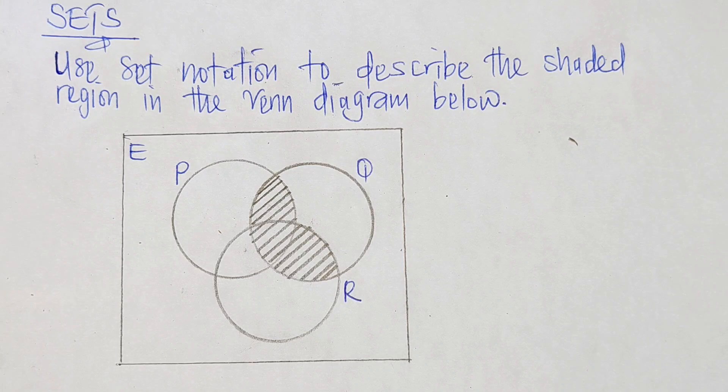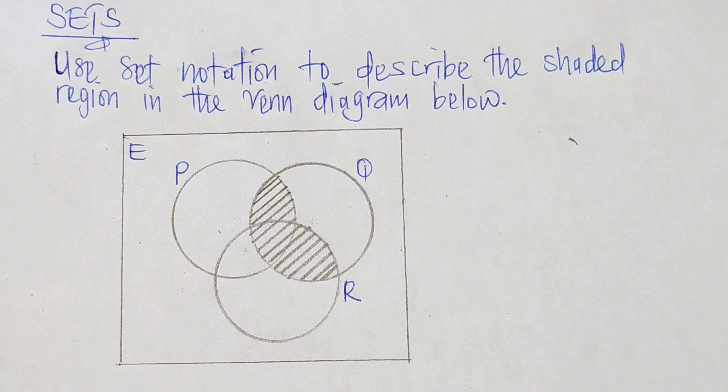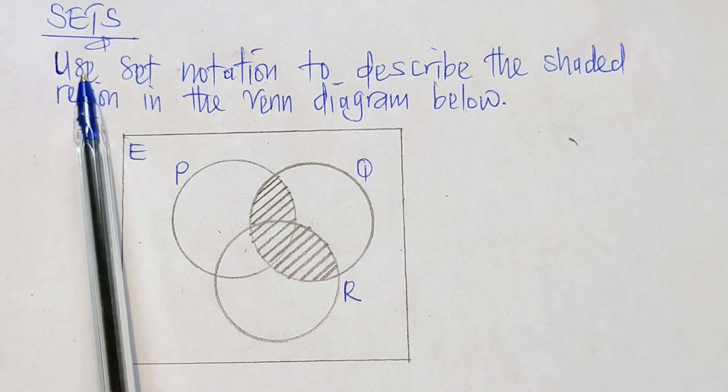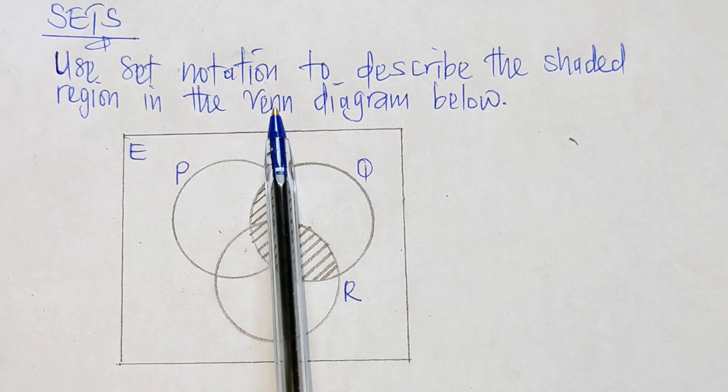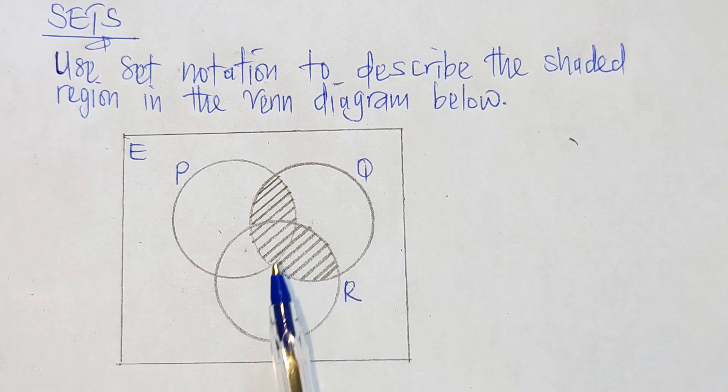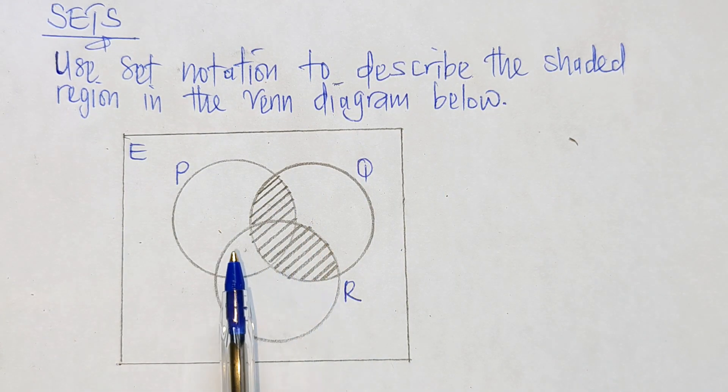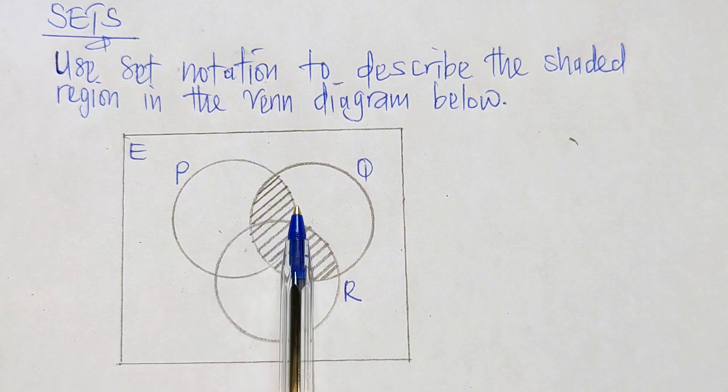Hi everybody, follow through as I answer this question on sets. The question reads: use set notation to describe the shaded region in the Venn diagram below. So this here is our Venn diagram, and if you've noticed here, the...